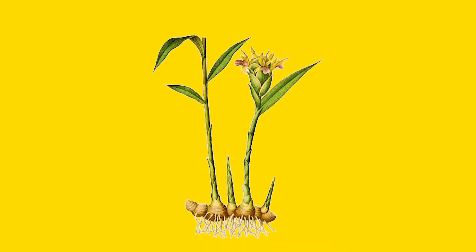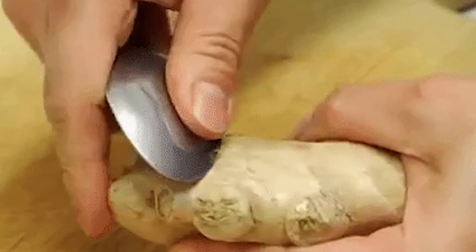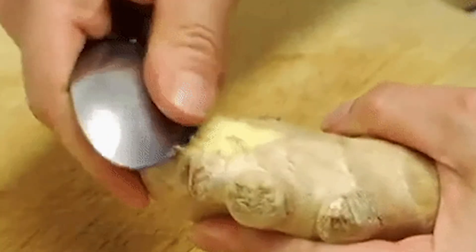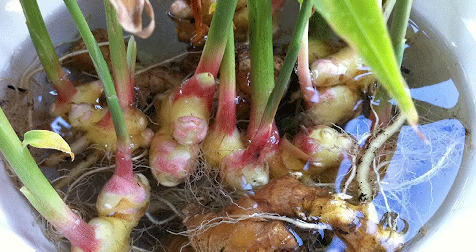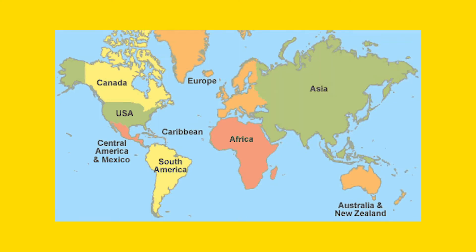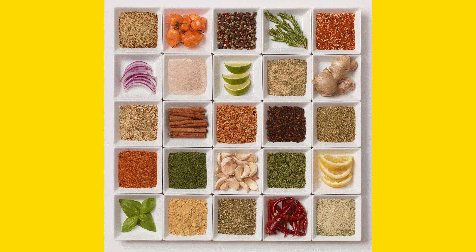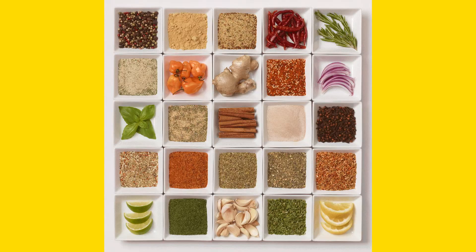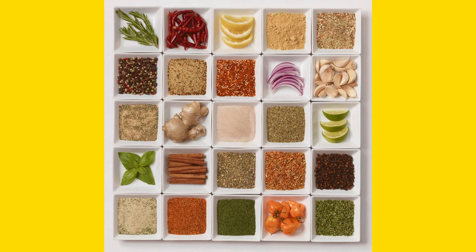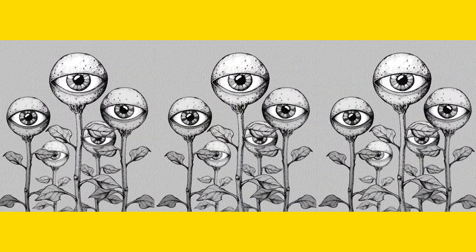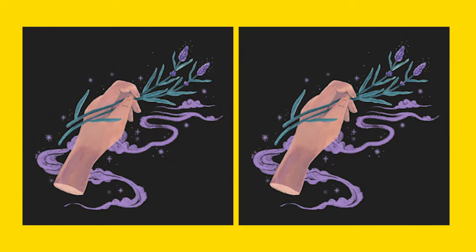Ginger, Zingiber officinale Roscoe, belongs to the family Zingiberaceae. It originated in Southeast Asia and has been used in many countries as a spice and condiment to add flavor to food. Besides this, the rhizome of ginger has also been used in traditional herbal medicine.